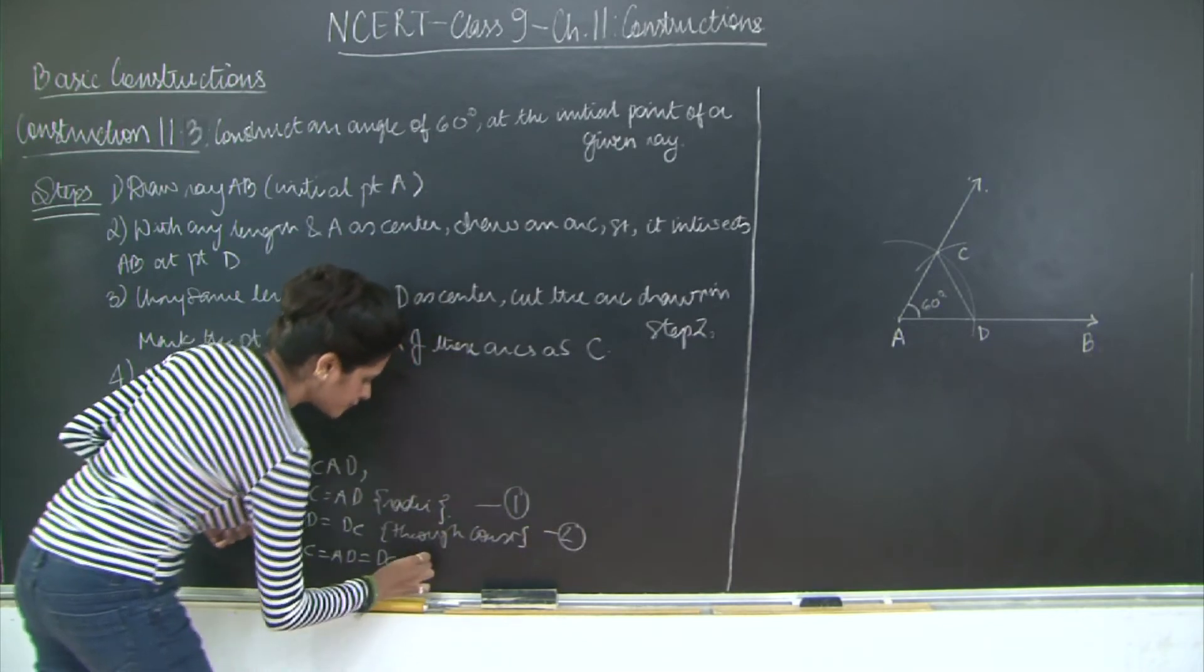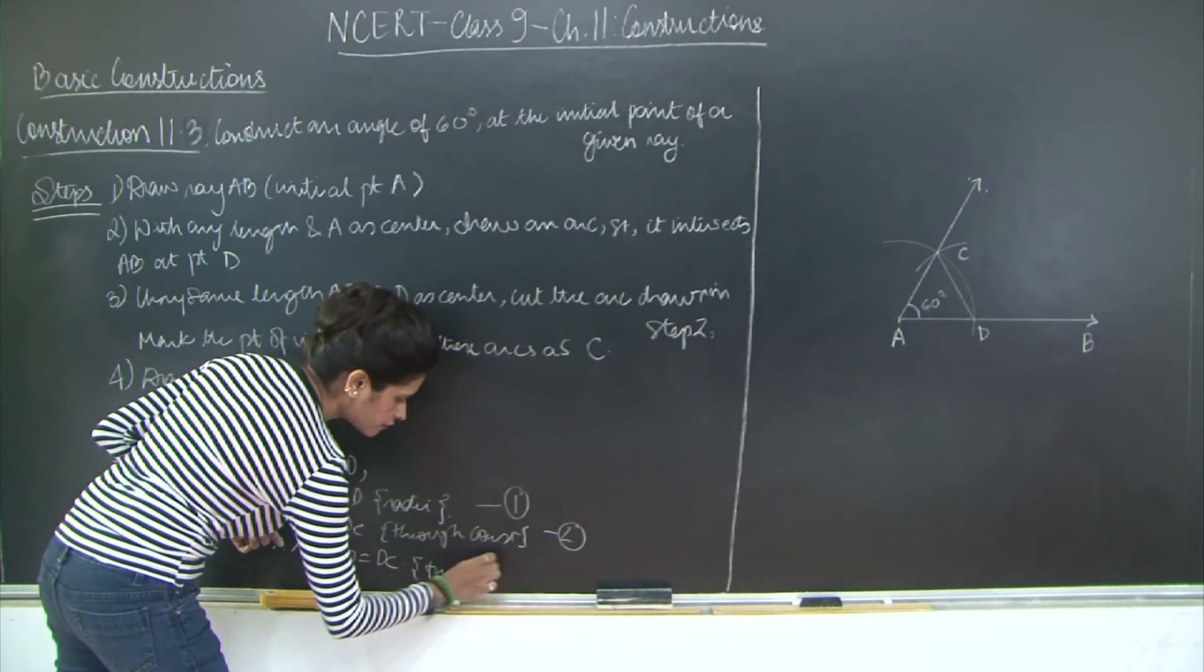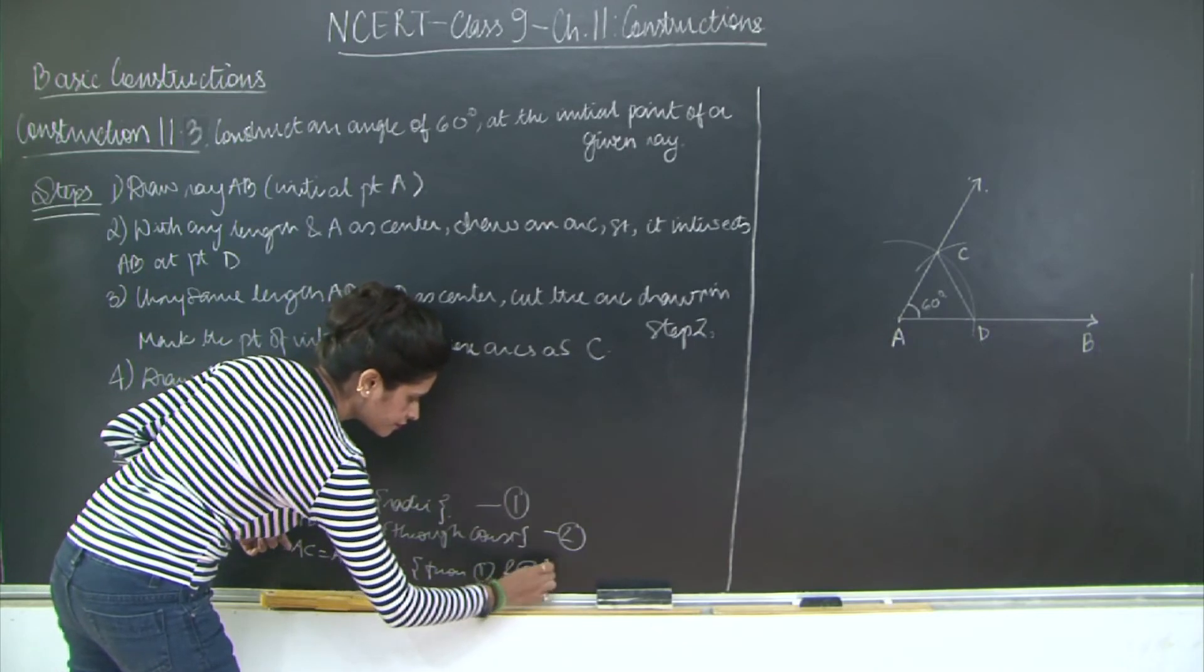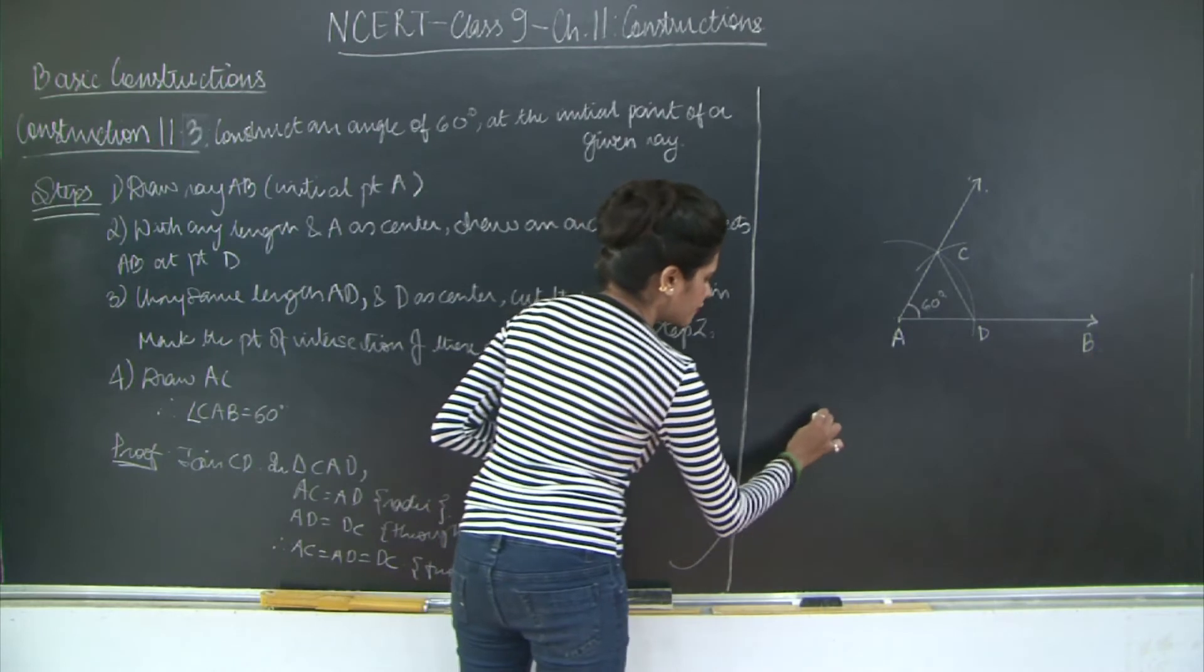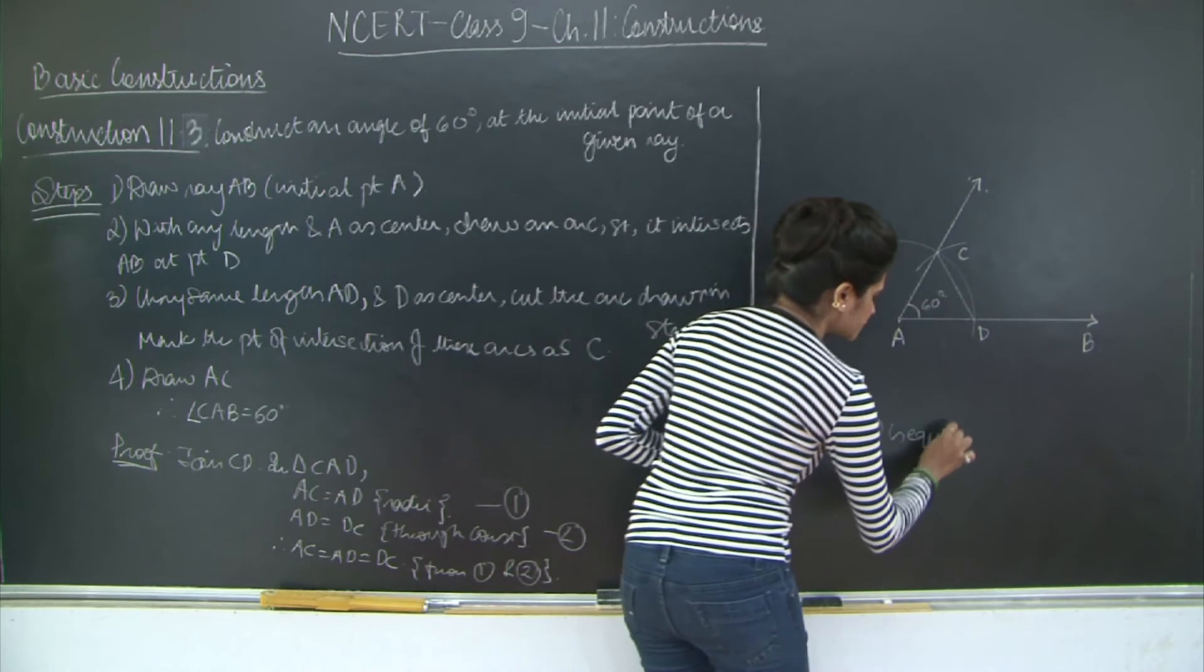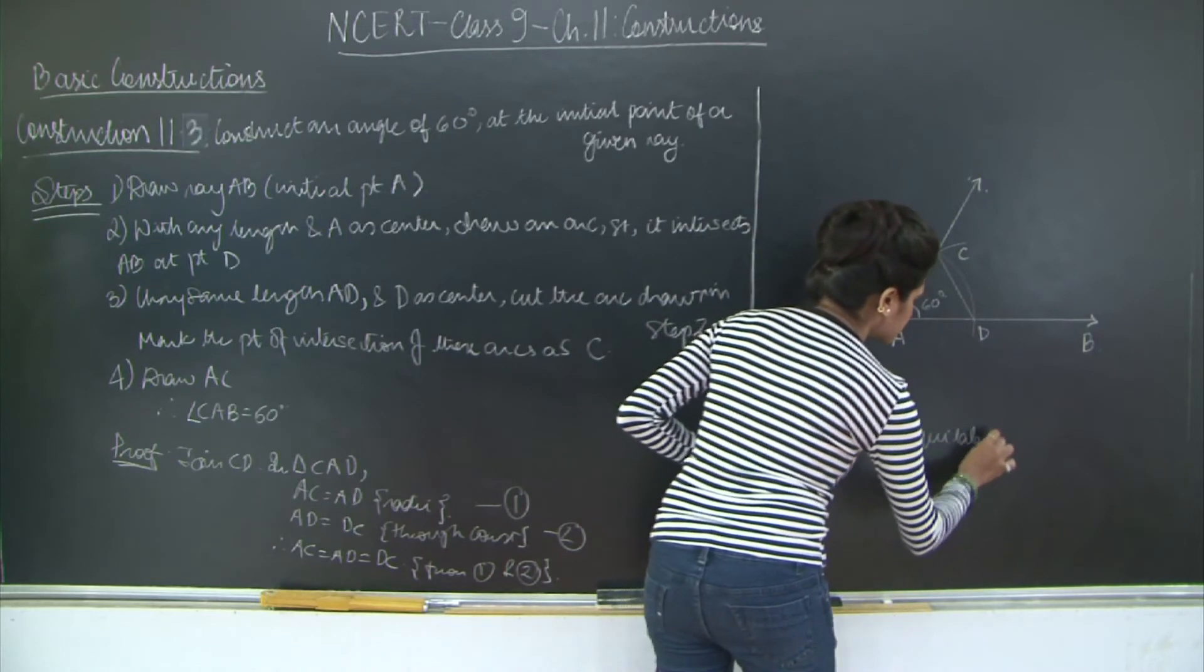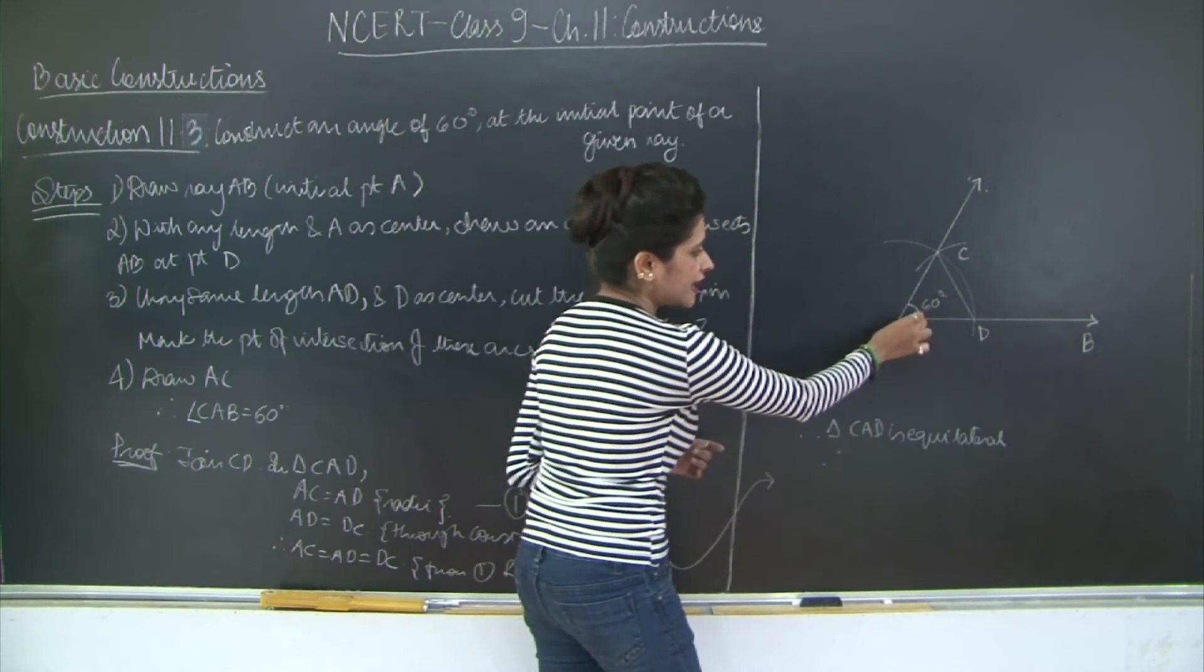From one and two, therefore triangle CAD is equilateral. So we need to prove this angle at the initial point of ray AB. Therefore angle CAD is equal to 60 degrees. Hence proved.